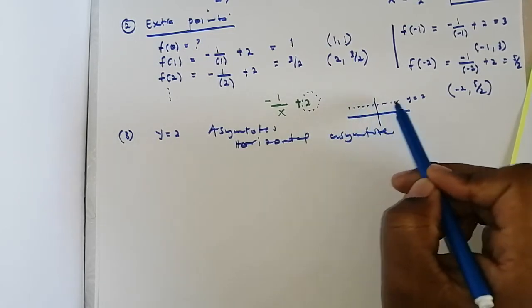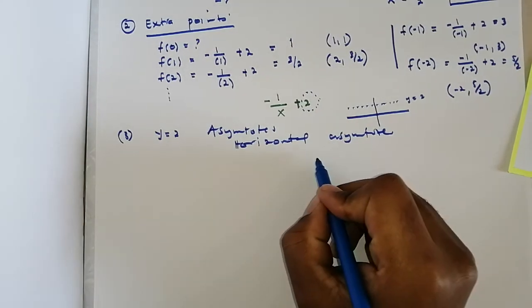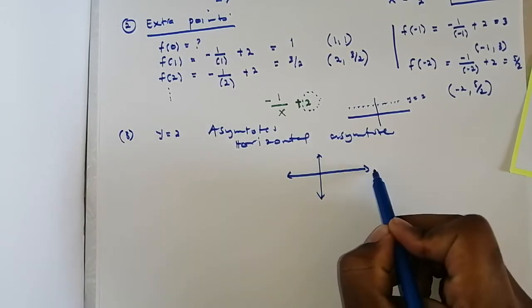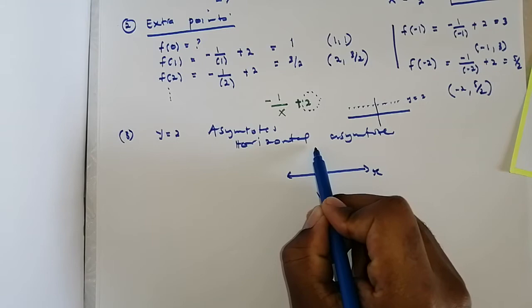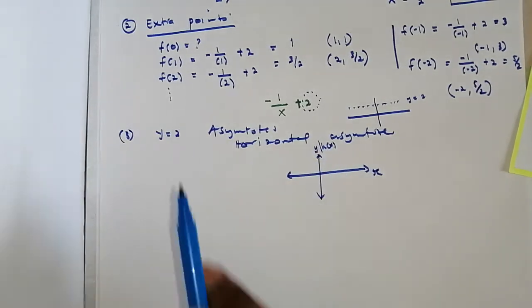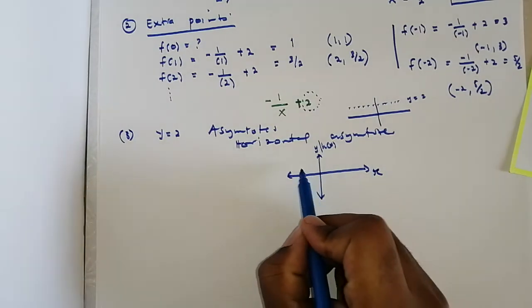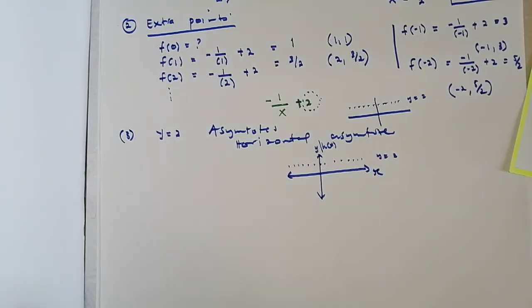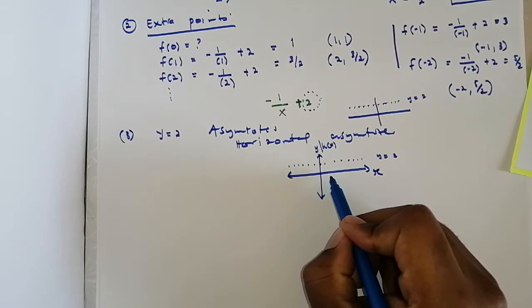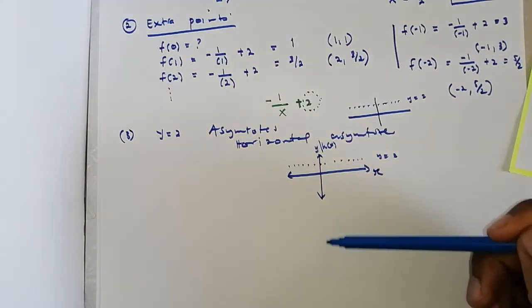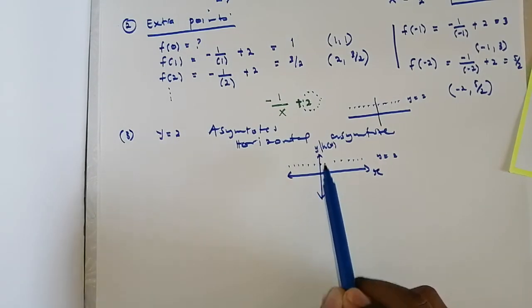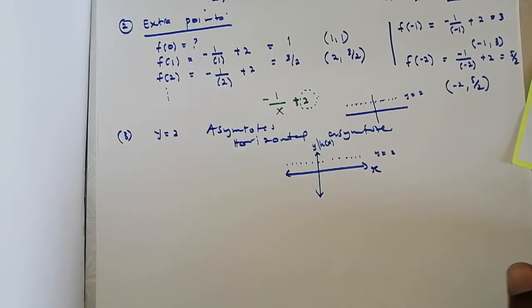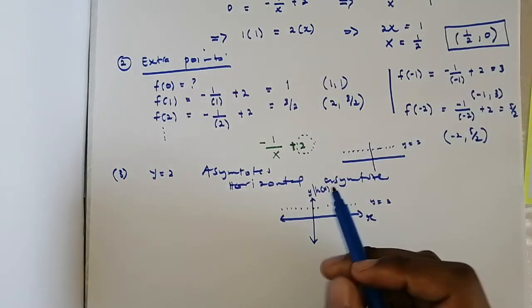Let's sketch the graph — note it's not drawn to scale. On the y-axis we label it h(x). At y equals two we have a horizontal asymptote drawn as a dotted line. The function has no y-intercept, so it will not cross the y-axis. It has an x-intercept at one half and zero.